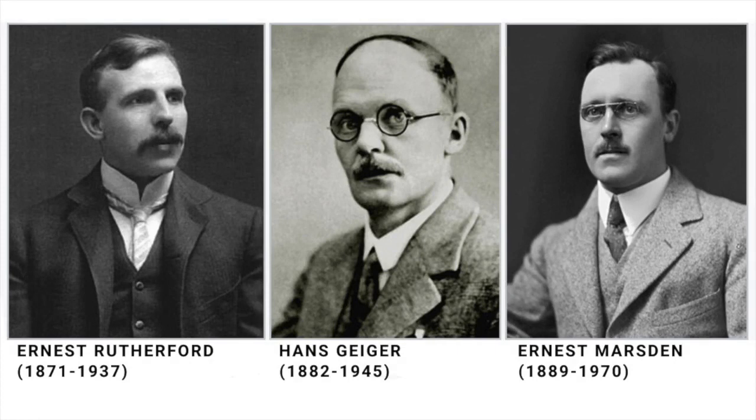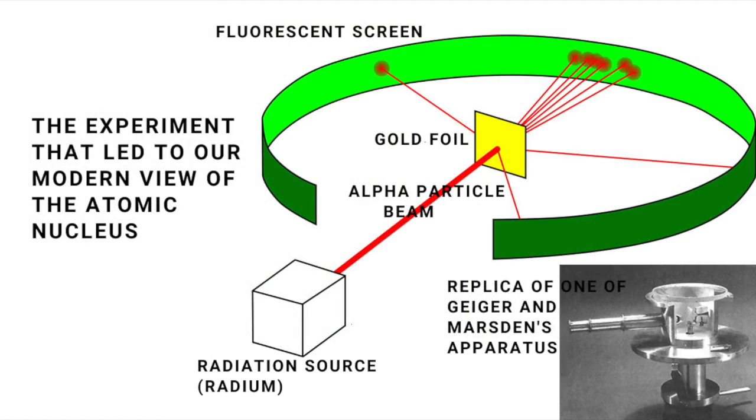In 1909, two researchers in Ernest Rutherford's laboratory at the University of Manchester, Hans Geiger and Ernest Marsden, fired a beam of alpha particles at a thin metal foil.